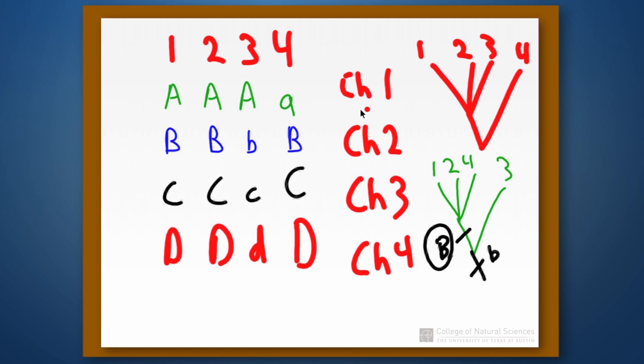And then what would happen for our character number one? Well, one, two, and three all have big A. And only four has little a. So we just simply say that there's an evolution to little a right here.